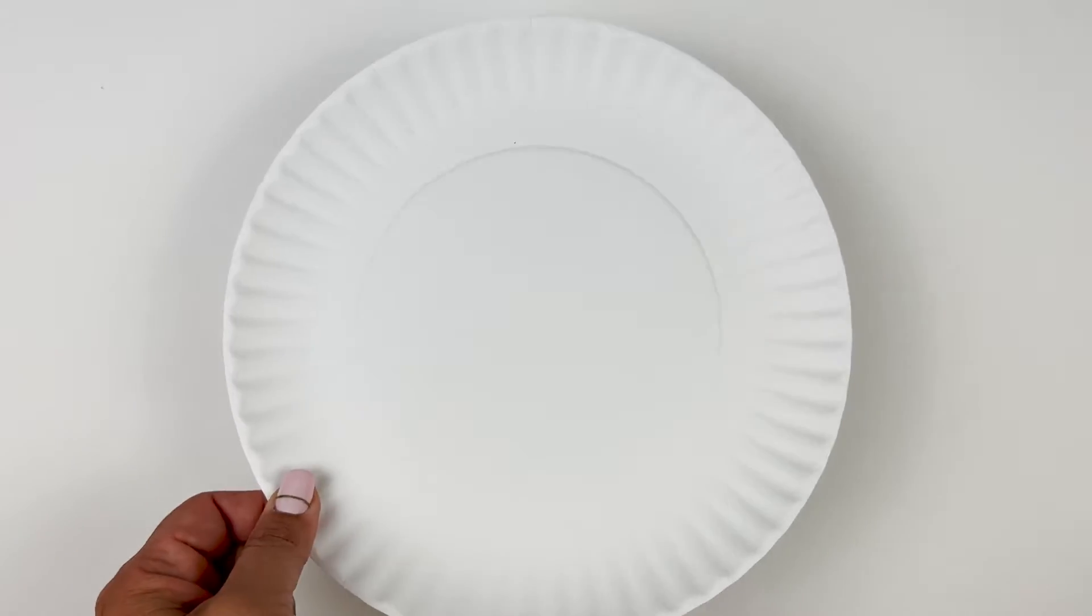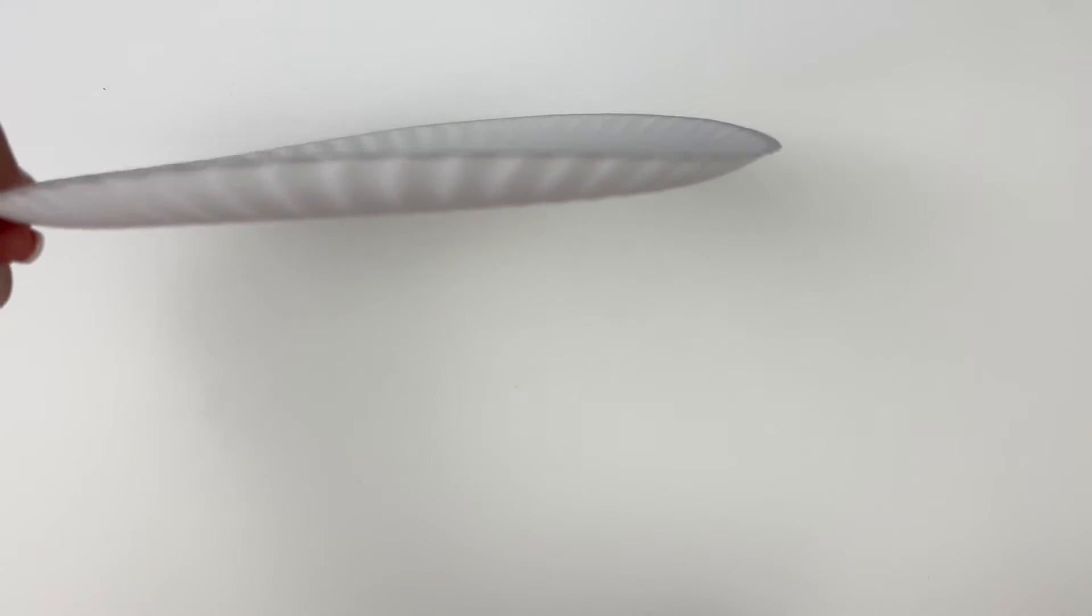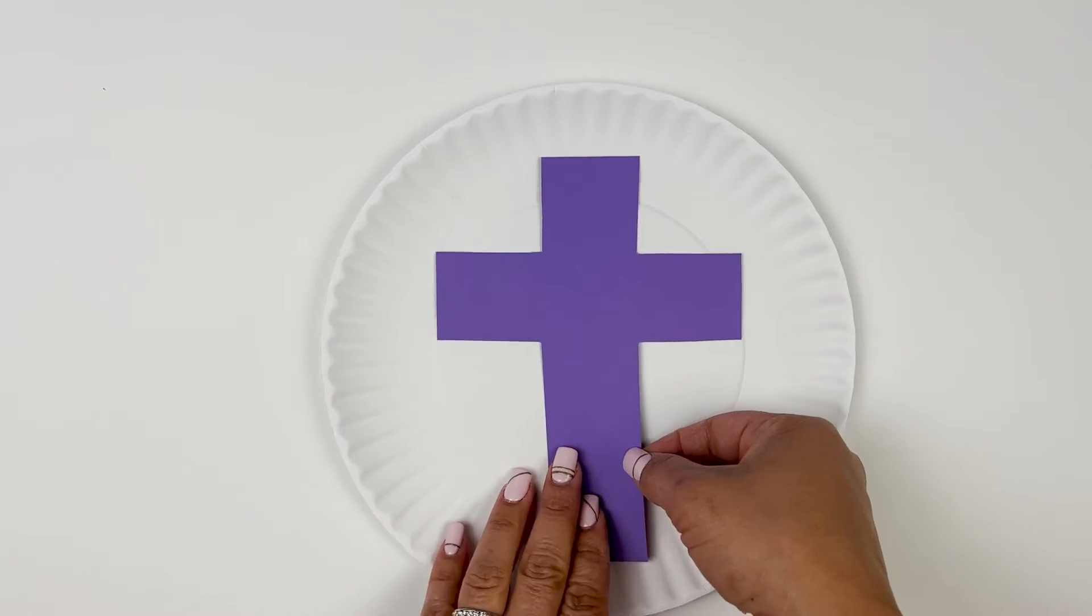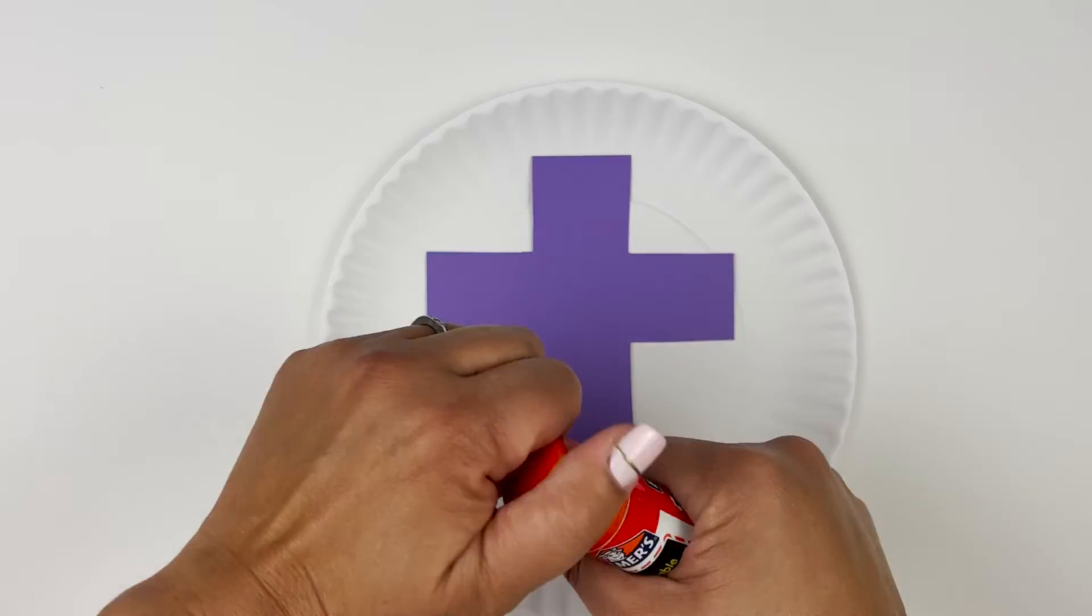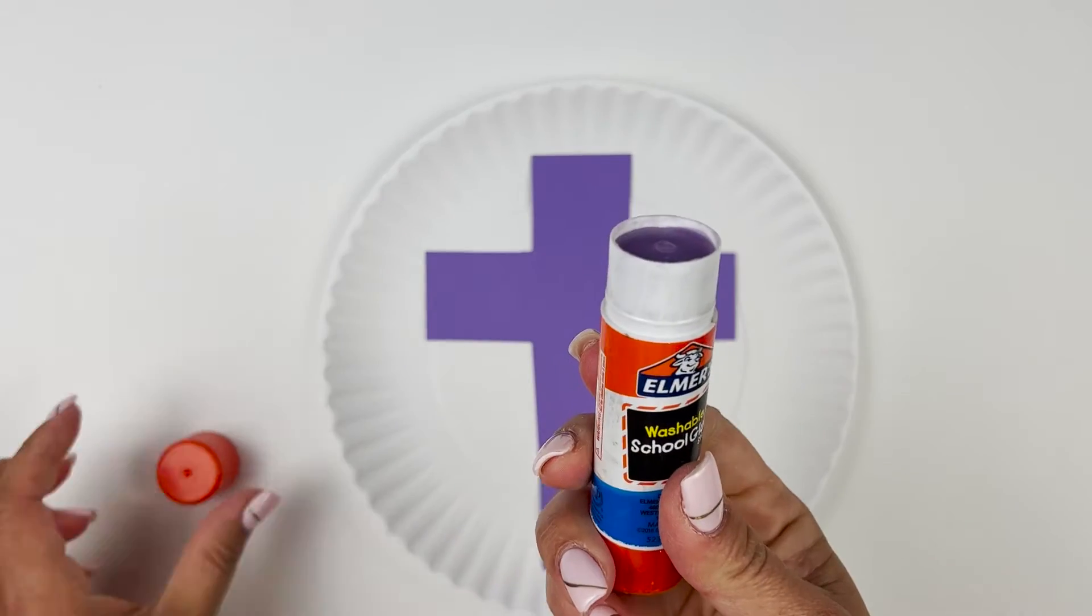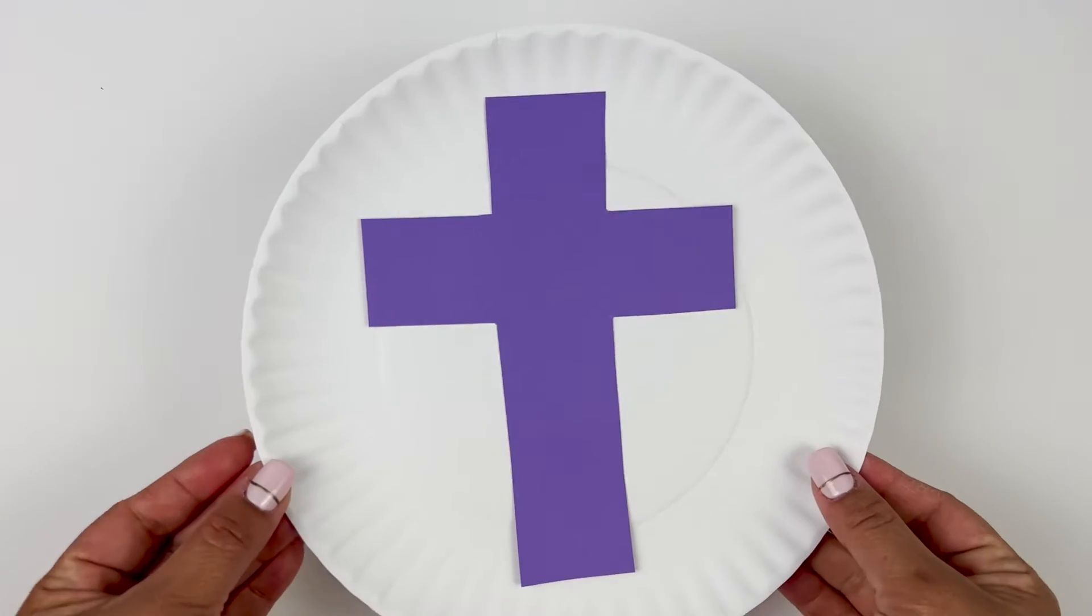And we're going to take our paper plate and the bowl side up. We're going to glue it right onto the center of our plate. Just like this.